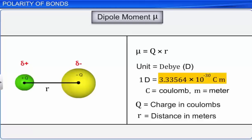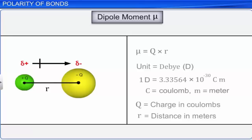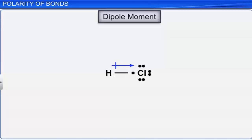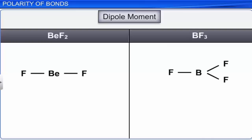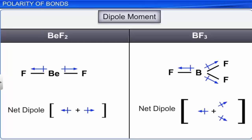Dipole moment indicates the degree of polarity in a molecule. It is represented by a crossed arrow starting at the positive pole and pointing towards the negative pole. For example, the dipole moment of hydrogen chloride is represented as shown. The crossed arrow indicated above a Lewis structure indicates the direction of electron shift. In polyatomic molecules, the net dipole moment is the vector sum of the dipole moments of all the bonds present in the molecule.